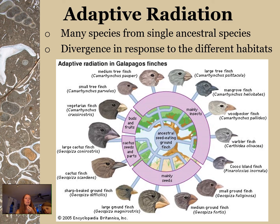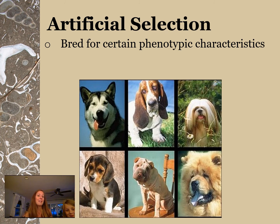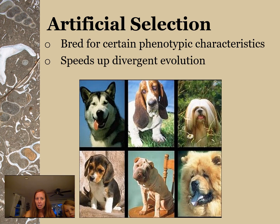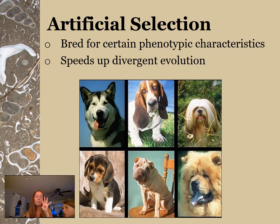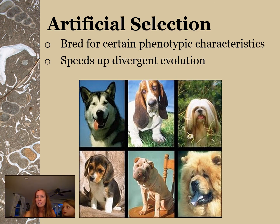Artificial selection is when you breed things for specific phenotypes — looking for specific characteristics. Humans do artificial selection and speed up divergent evolution because we want things to look a certain way, like breeding two large Great Danes together to get an even bigger one. To summarize: we use FAME to prove evolution — fossils, anatomy, macromolecular, and embryological proof — and the types of evolution are co-evolution, convergent evolution, and divergent evolution.